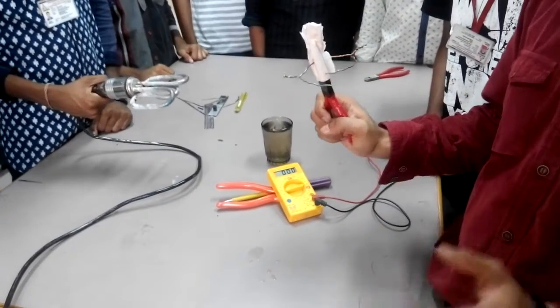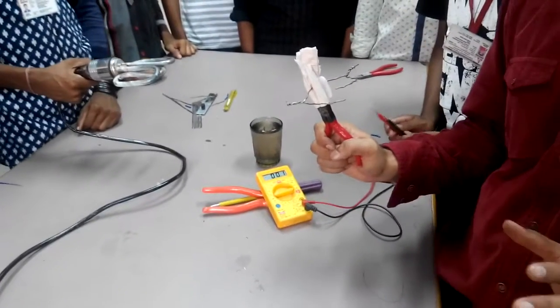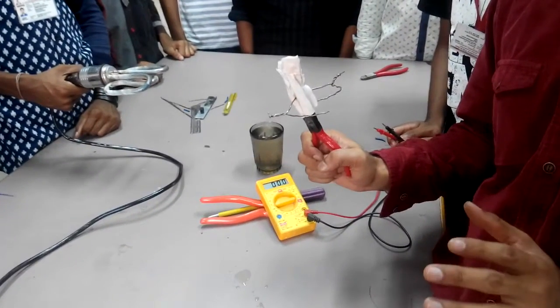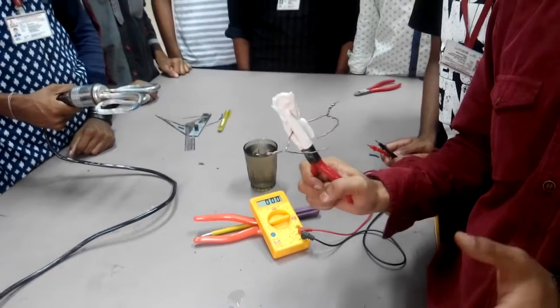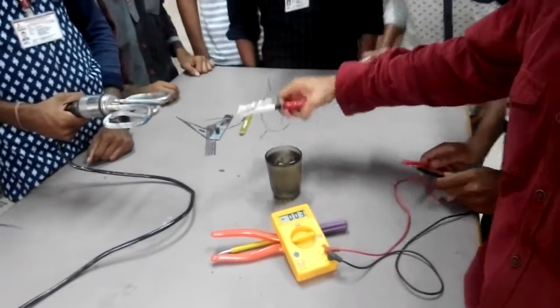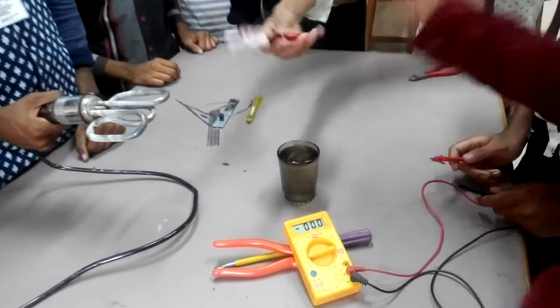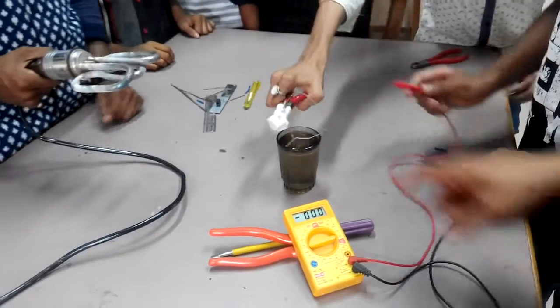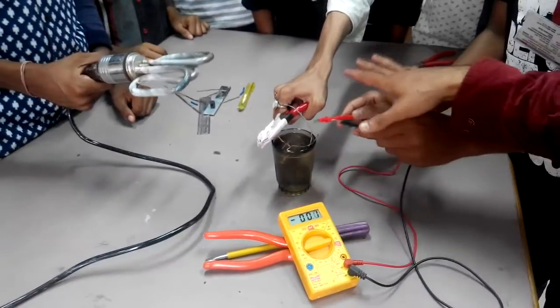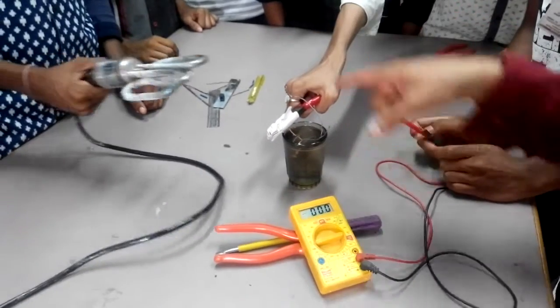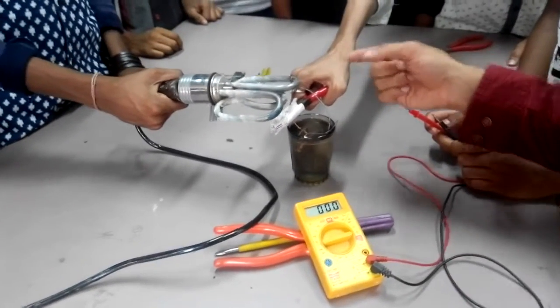Let's start this practical to see how the thermocouple works, how the Seebeck effect actually works. One junction we are placing in the icy water, so it is a cold junction. And for the hot junction we are connecting the heater.